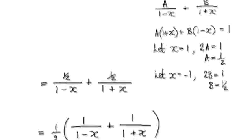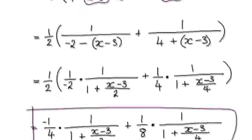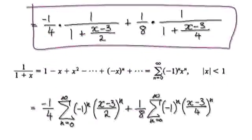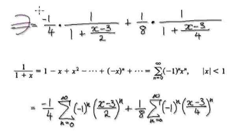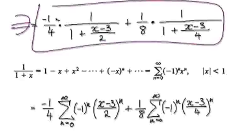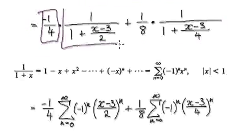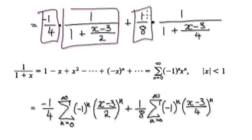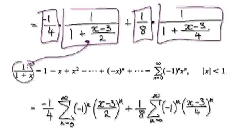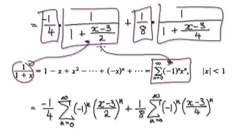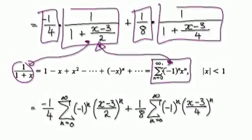Following on from the previous video, we got to this stage here. Now you've got one block multiplying another block, plus this block multiplying this block. This block here is of this form, so we can make use of this — we can put this into here. And then this block here is of this form, so we can replace this and put this into here.